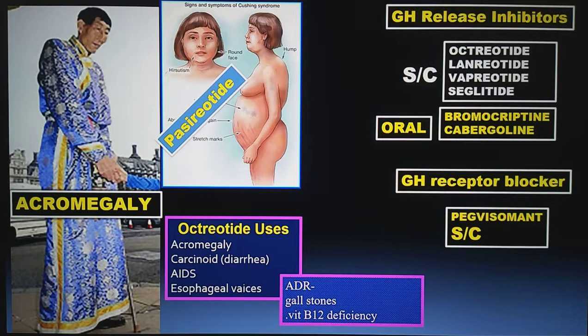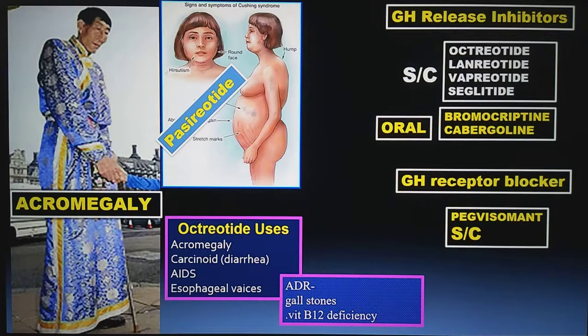That finishes my first case presentation. We discussed drugs useful for treatment of acromegaly, extra points about octreotide, and new information — pasireotide is a somatostatin analogue useful for treatment of Cushing syndrome.